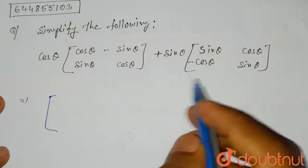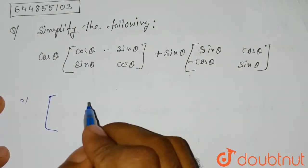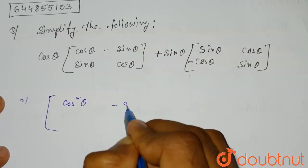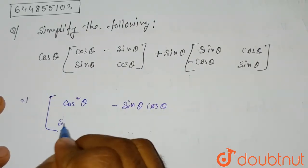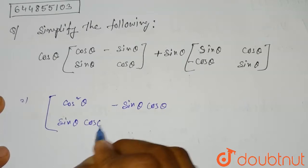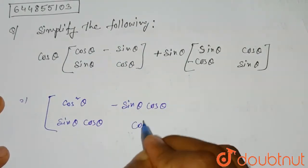Using the matrix property, we can write it as cos theta multiplied with cos theta, so it will be cos square theta, minus sin theta cos theta, sin theta cos theta, sin theta cos theta, and cos square theta when cos theta is multiplied with all the elements.